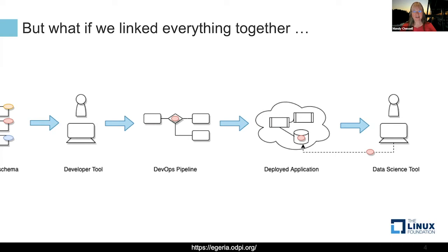This is the dream we're trying to achieve with Egeria. We've built this in an open source project hosted in ODPI, which is part of the Linux Foundation, so that it is an open, fair environment. That theme of openness and fairness is built into the platform as well — there is no central control, no single centralized database. The aim is to make those exchange mechanisms as open and fair as possible, so that as many tools as possible can be part of this ecosystem.